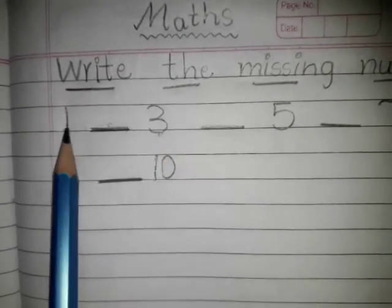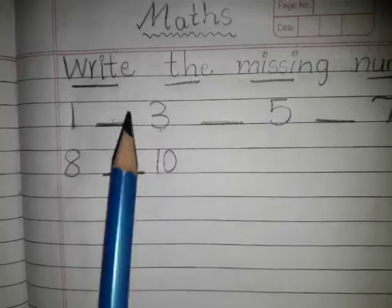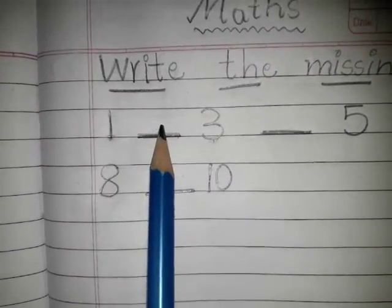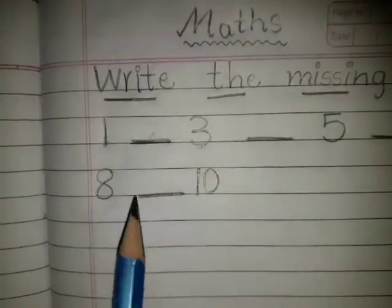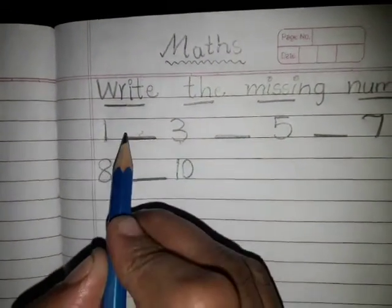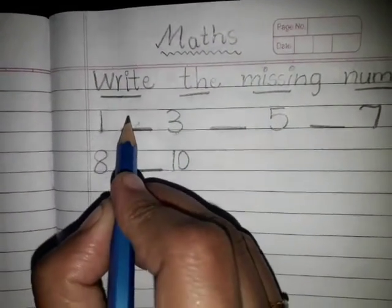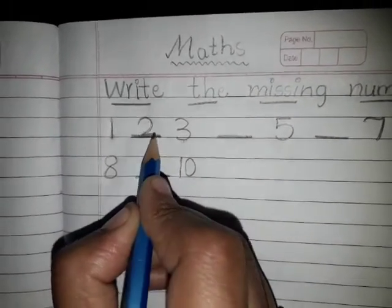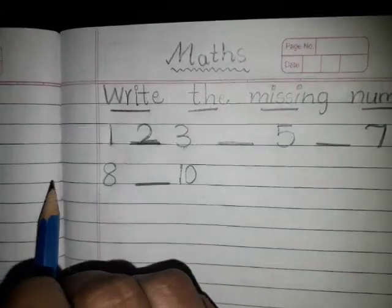Now tell me children, between number 1 and number 3, which number is missing here? Yes, you all are very smart children. Number 2. Okay, number 2. Now,